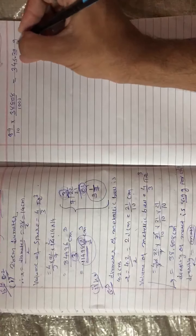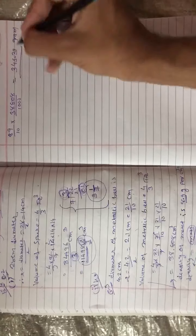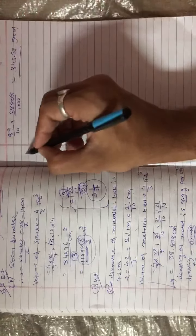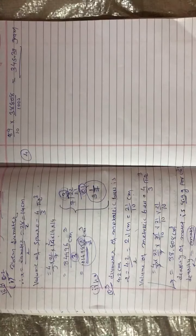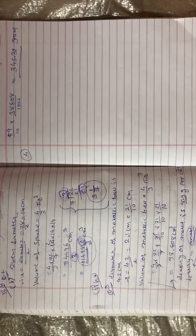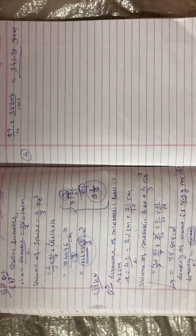So 8.9 multiplied by 38.808 gives 345.39 grams. That is the mass of the spherical ball. Question number 4: the diameter of the moon is approximately one-fourth of the diameter of the earth. What fraction of the volume of the earth is the volume of the moon?